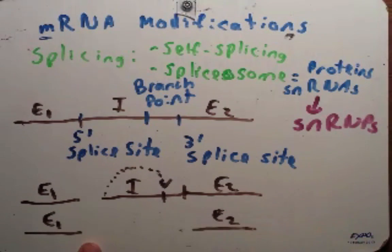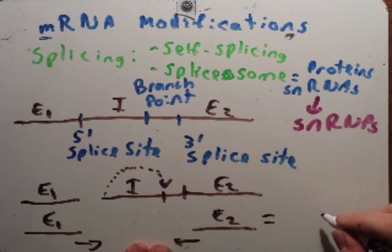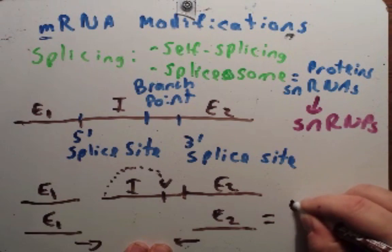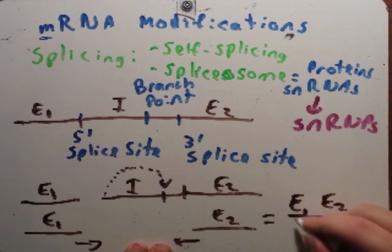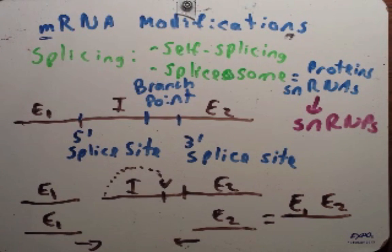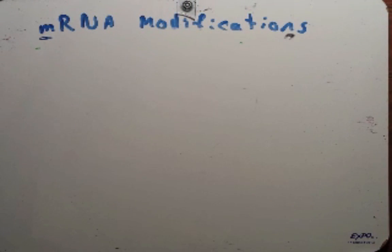And remember, this is all occurring within that spliceosome. And so what happens now is different parts of that spliceosome bring these two together, the two exons together. And we end up with a mature messenger RNA that has exon 1 and exon 2 right here with the intron removed. And this is the messenger RNA that is now ready to make a protein.